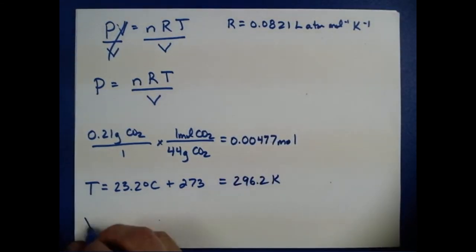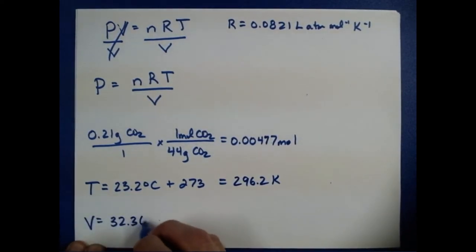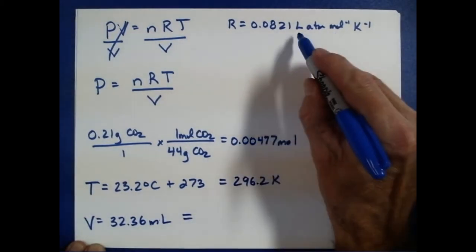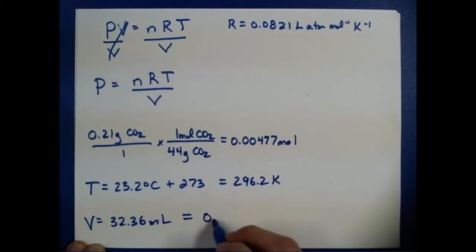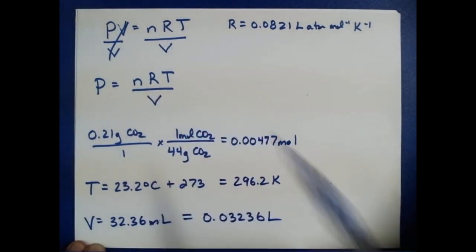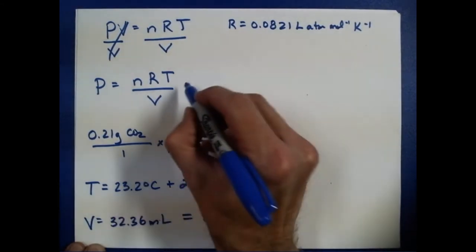And then finally, our volume, that was 32.36 milliliters, and if we convert that to liters, so we can keep our units consistent, that's going to be 0.03236 liters. Let's see, I think I've got everything that I need here, so let's start plugging things in.